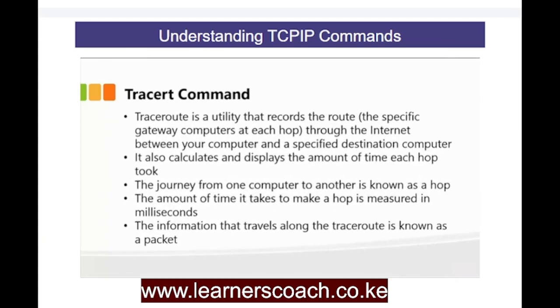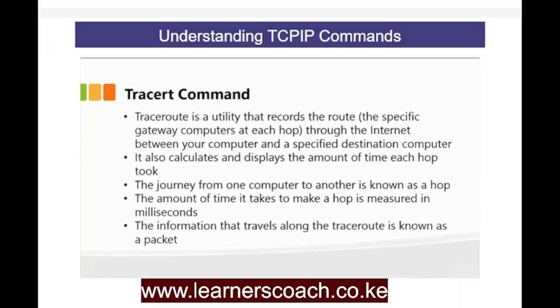Then we have the tracert command. This is a utility that records the actual route through the internet. If you connect from one computer to another, it shows how many hops it made from one computer to the next, eventually reaching the destination. It calculates and displays the amount of time each hop took — the journey from one computer to the other is called a hop, measured in milliseconds. The information travelling through the trace route is known as a packet.